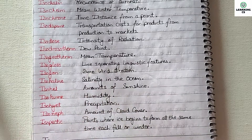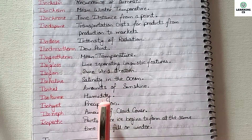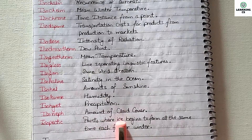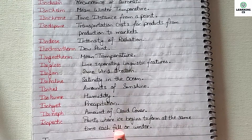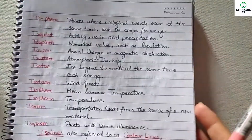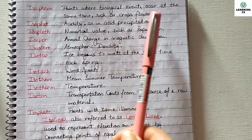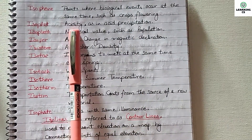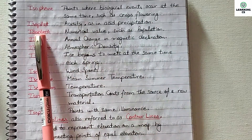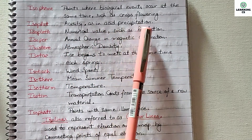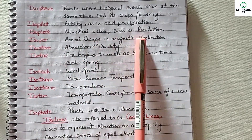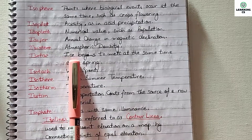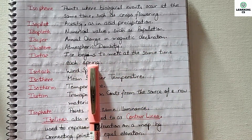Isohume: same humidity. Isohet: equal precipitation. Isonef: same amount of cloud cover. Isopactic: point where ice begins to form at the same time each fall or winter. Isophen: point where biological events occur at the same time, such as crop flowering. Isopleth: acidity as in same acid precipitation, or numeric value such as population. Isopore: annual change in magnetic declination.